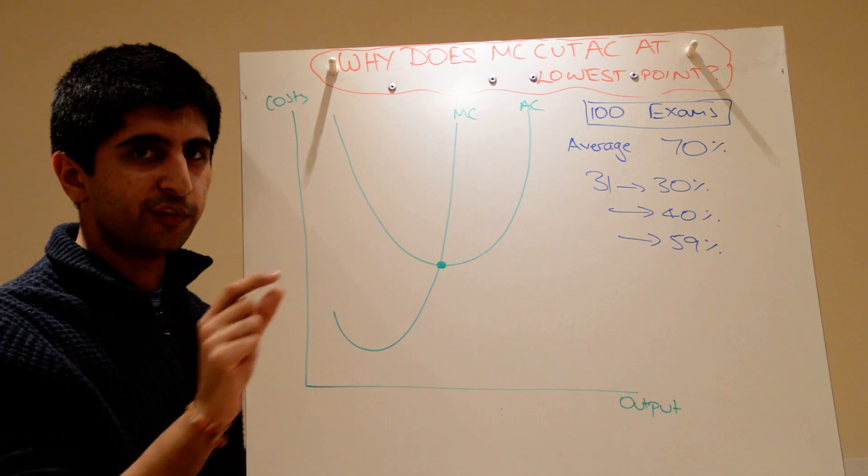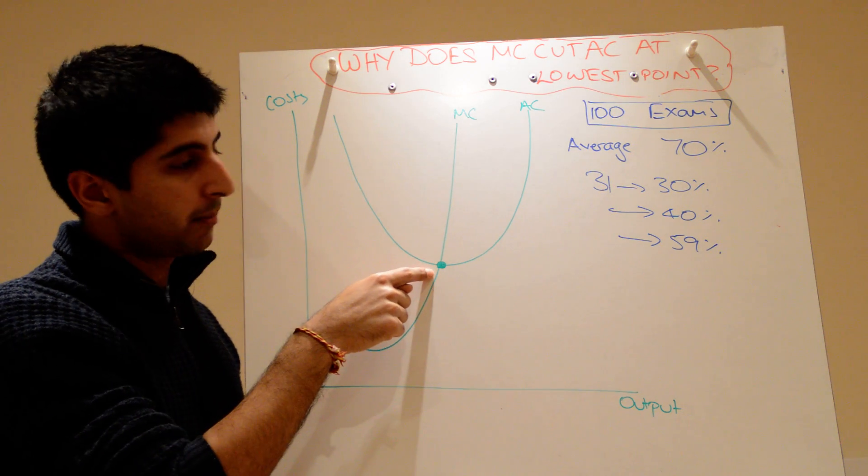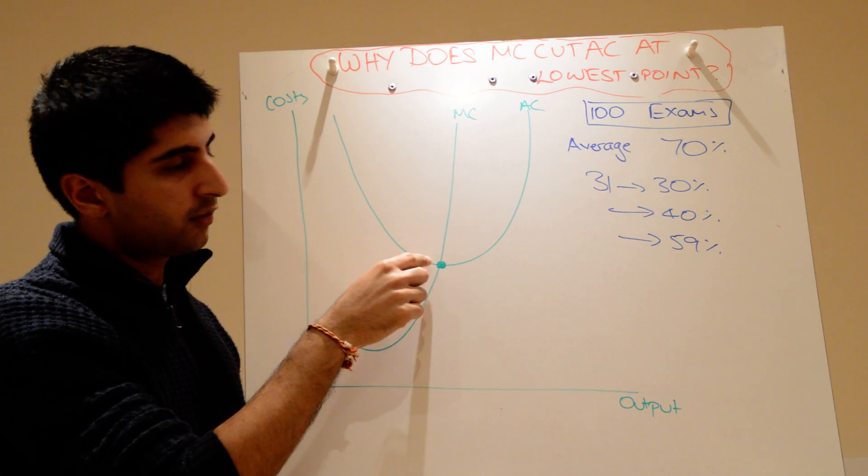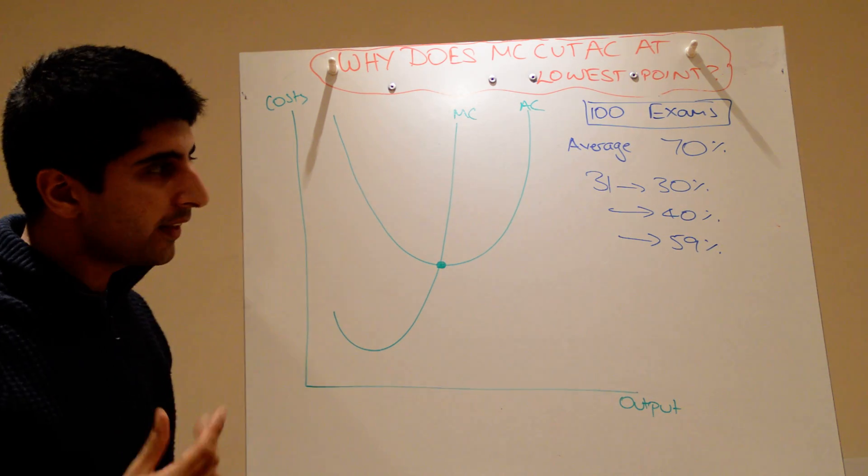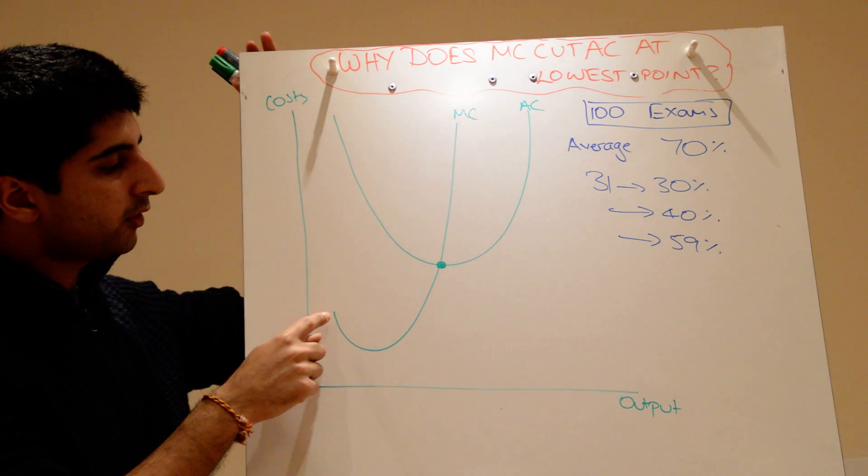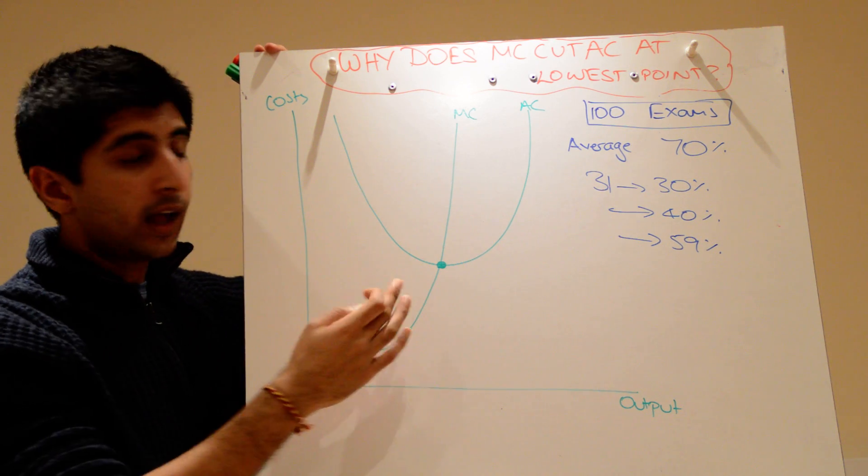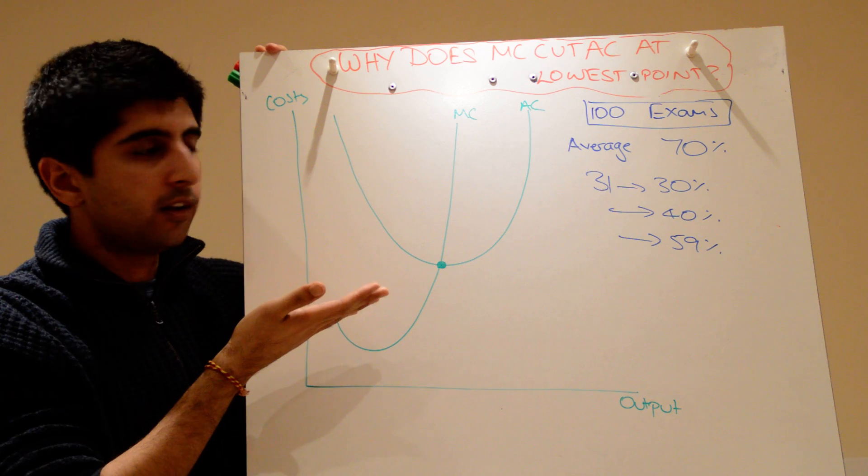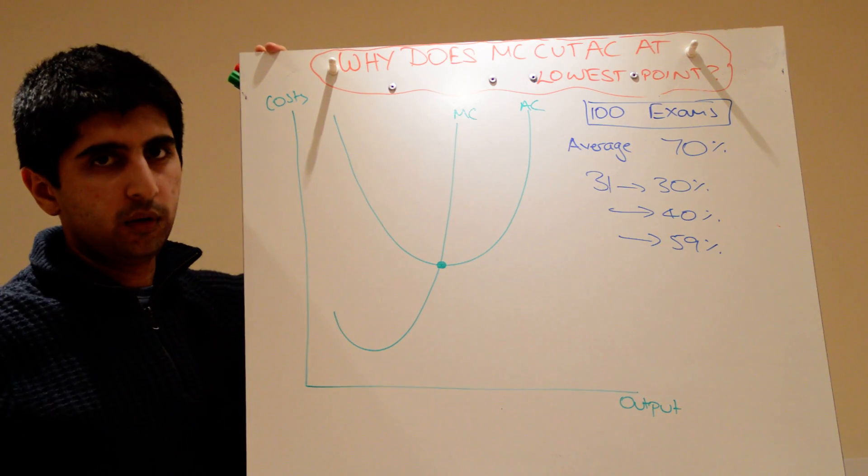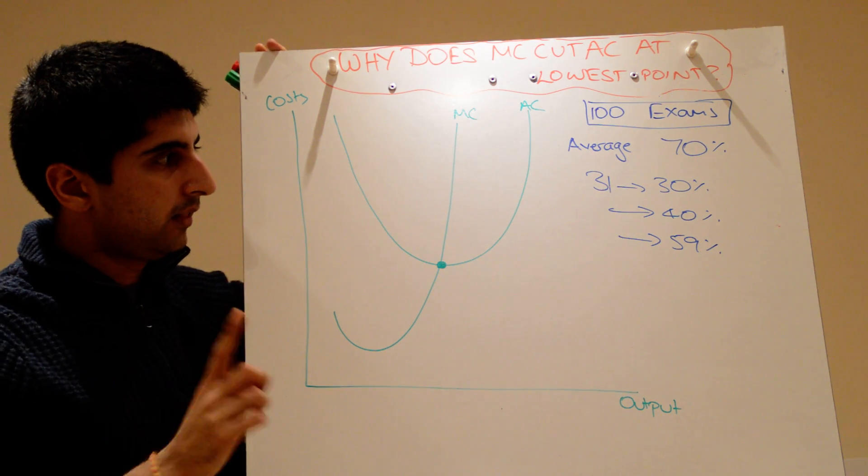It becomes a little bit flatter, but it's still falling. So 59% increase over there. The average is slightly above, so it falls more slowly. The key thing to take away there is, even if the marginal is decreasing, or if the marginal is increasing, as long as the marginal effect is less than the average, the average will always fall. Key thing to take away from that.